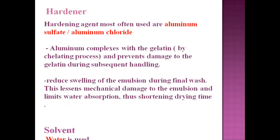The hardener — most often aluminum sulfate or aluminum chloride — forms aluminum complexes with gelatin by a chelating process. It prevents damage to the gelatin during subsequent handling, reduces swelling of the emulsion during the final wash, lessens mechanical damage to the emulsion, and limits water absorption. The solvent is water.